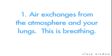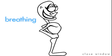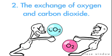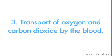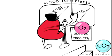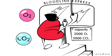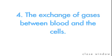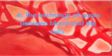One: air exchanges from the atmosphere into your lungs — this is breathing. Two: the exchange of oxygen and carbon dioxide. Three: transport of oxygen and carbon dioxide by the blood. Four: the exchange of gases between blood and the cells.